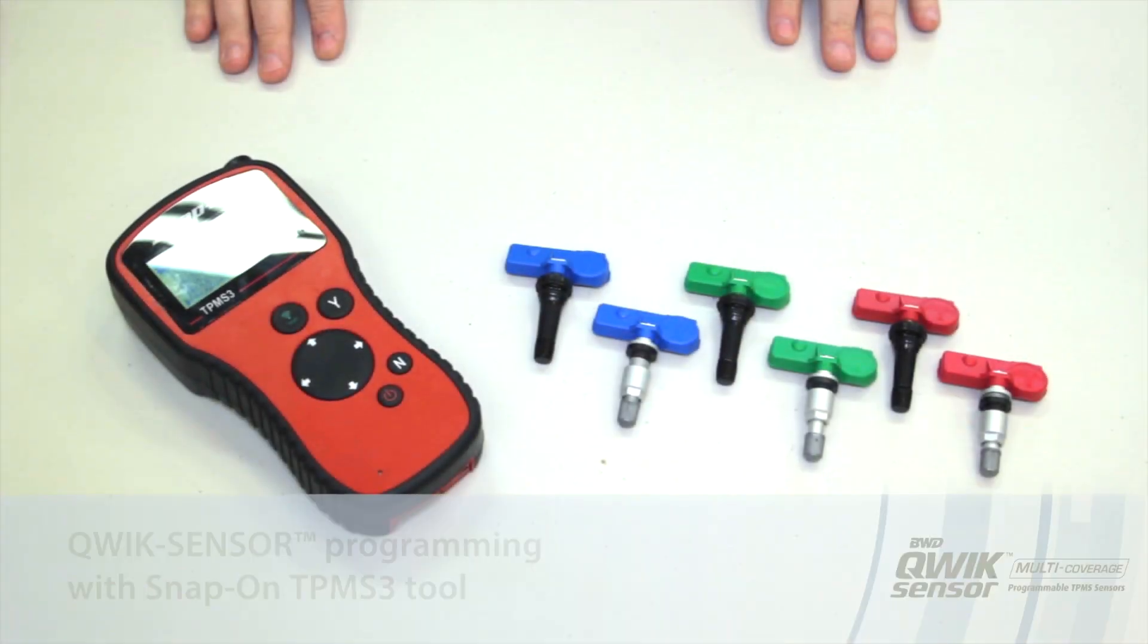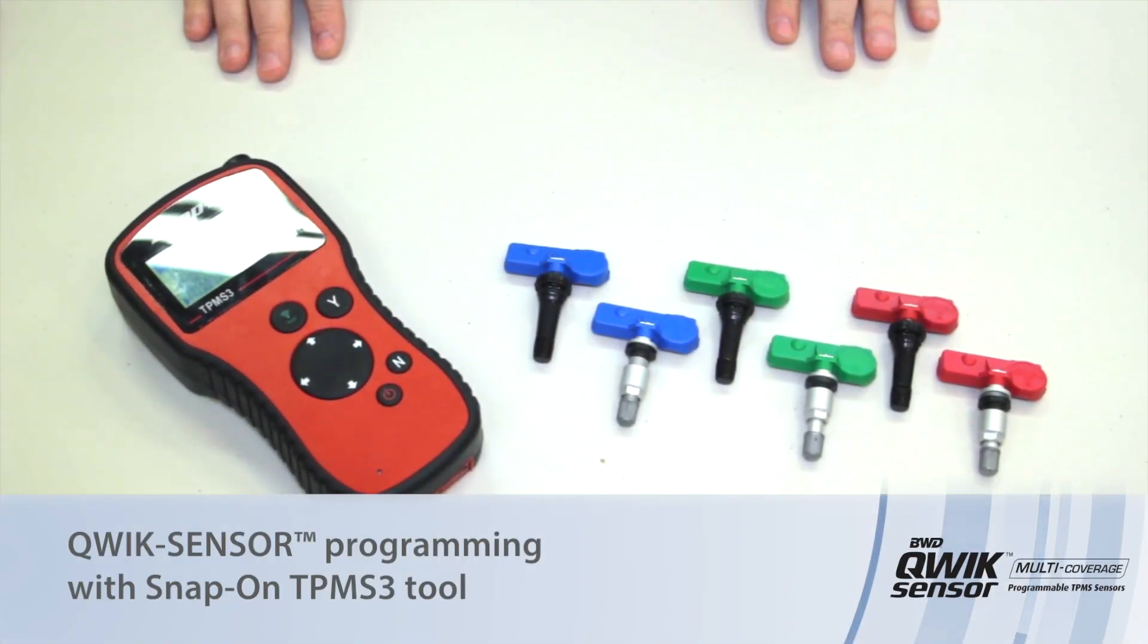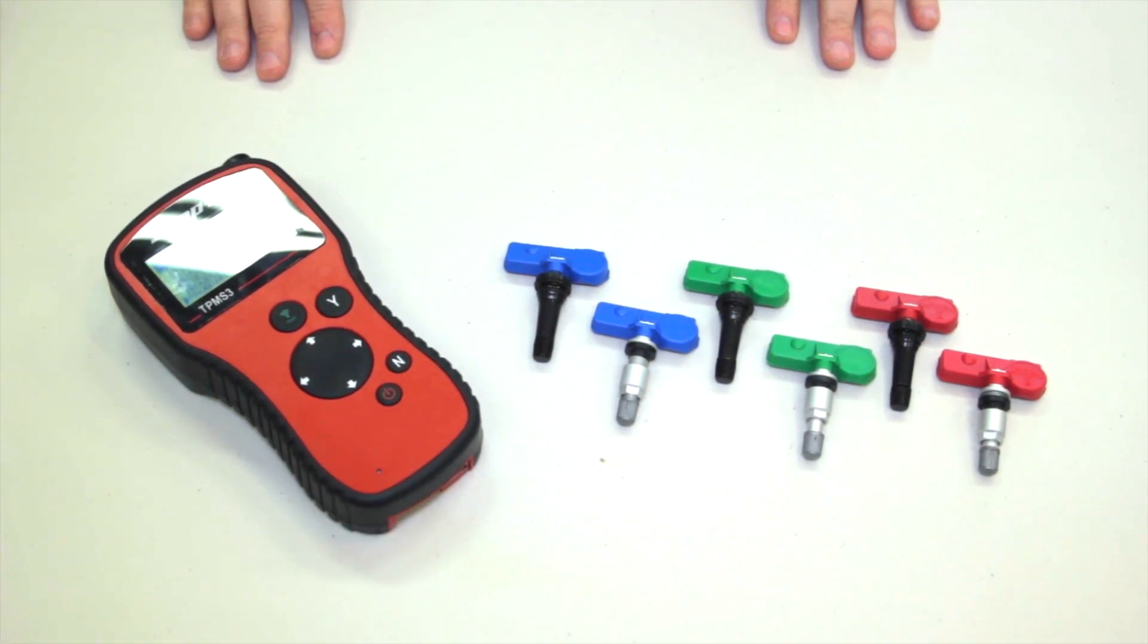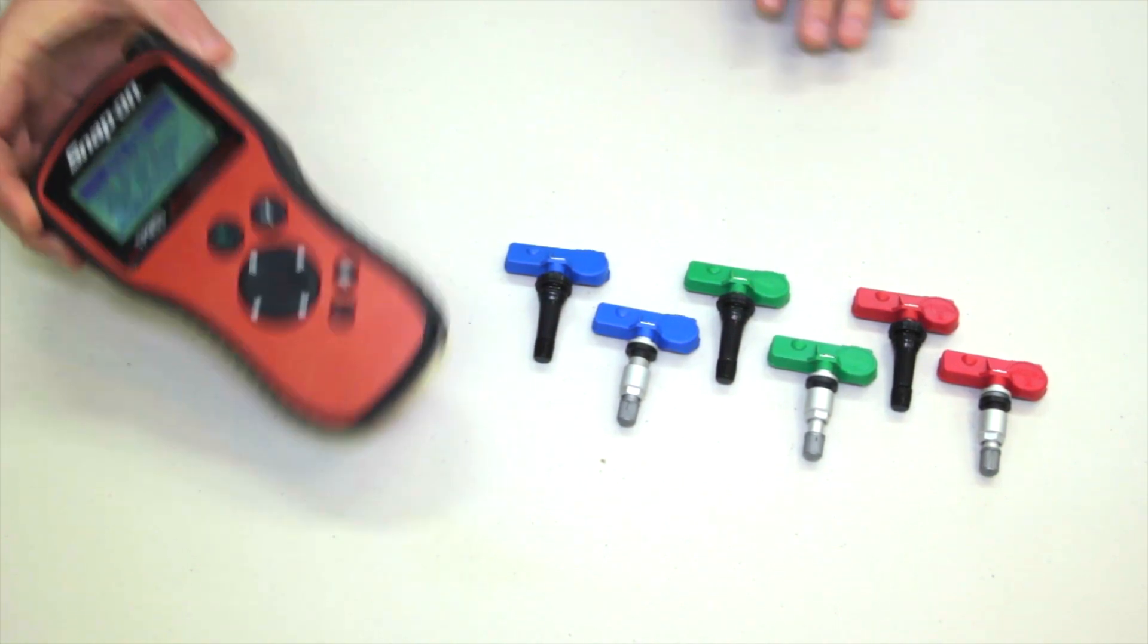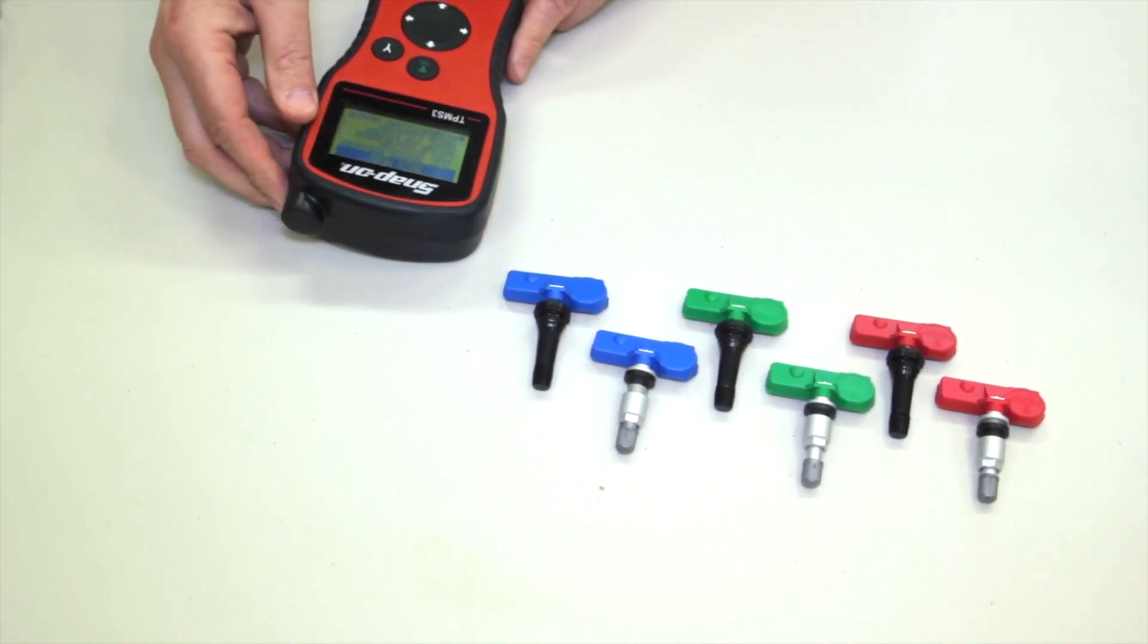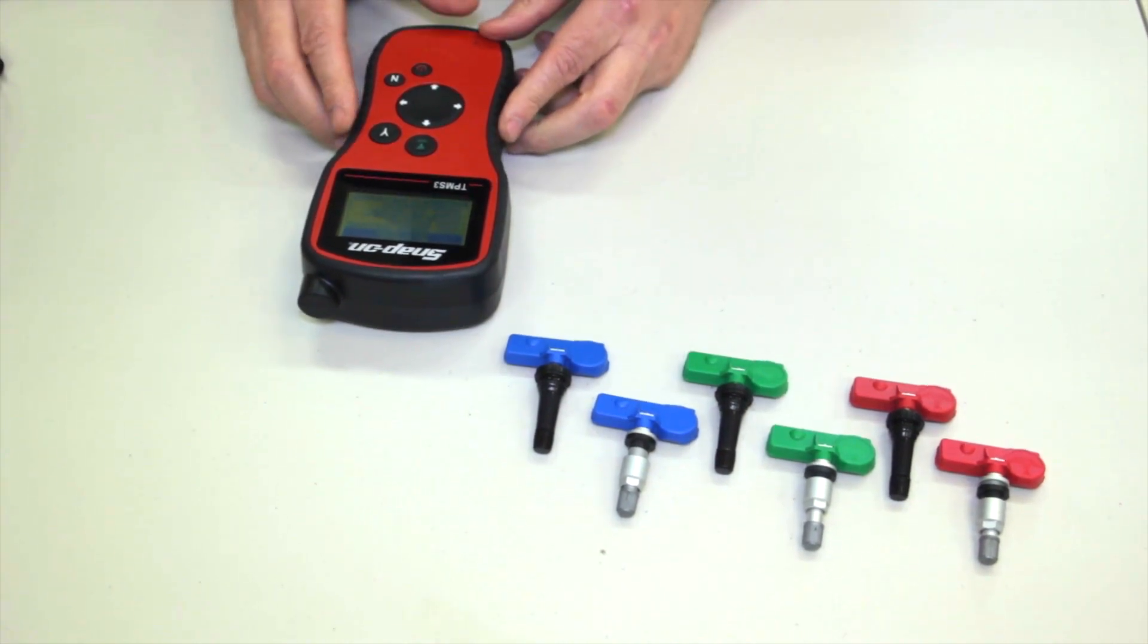Today let's discuss how to program a quick sensor. The quick sensor multi-coverage TPMS sensor is designed to be programmed prior to installation. Using a simple programming tool, you can pick the year, make, and model and have it fit the application that you're working on.